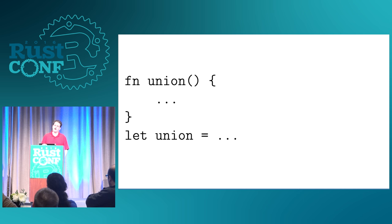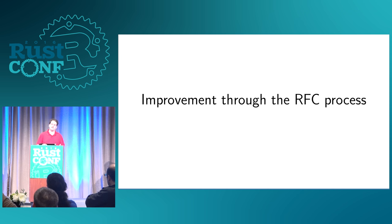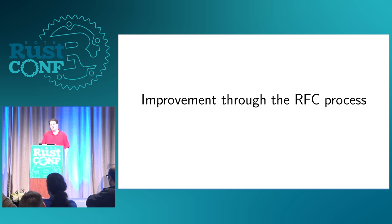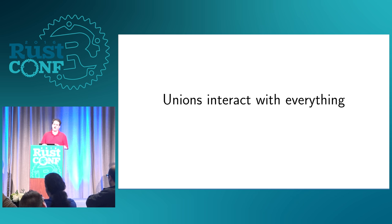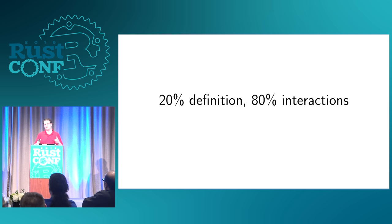I mention this not by way of demonstrating bike-shed painting, but rather to say this is the kind of improvement that happens through the RFC process — here's a bunch of people with a bunch of ideas on how to do this better, and we ended up with something much better than what we would have done without that process. Another aspect I had to deal with when writing these RFCs was that unions interact with everything, and the RFC needs to discuss all those language interactions. The result was that the RFC was about 20% the definition of unions and 80% how it touches absolutely everything else.